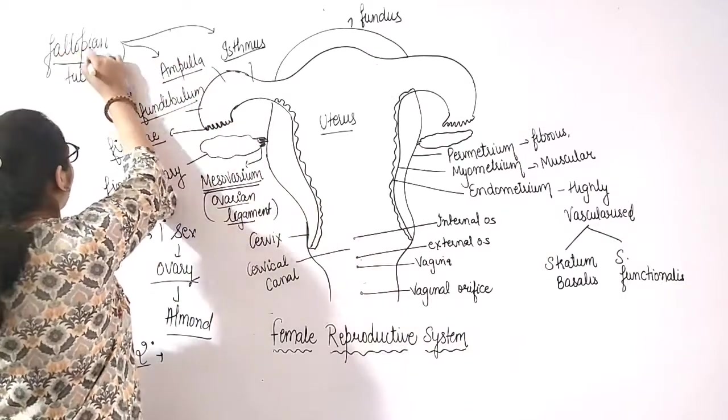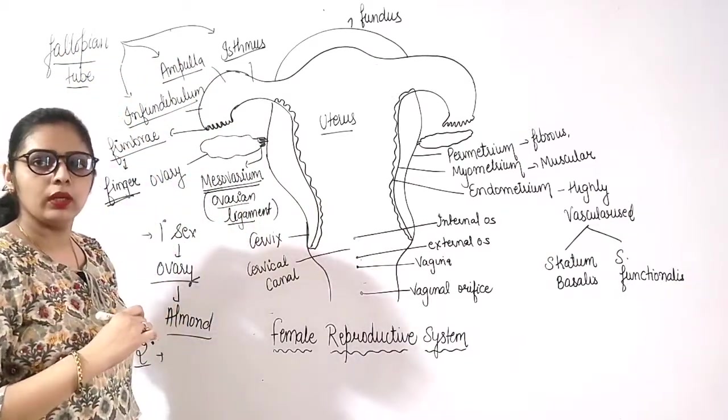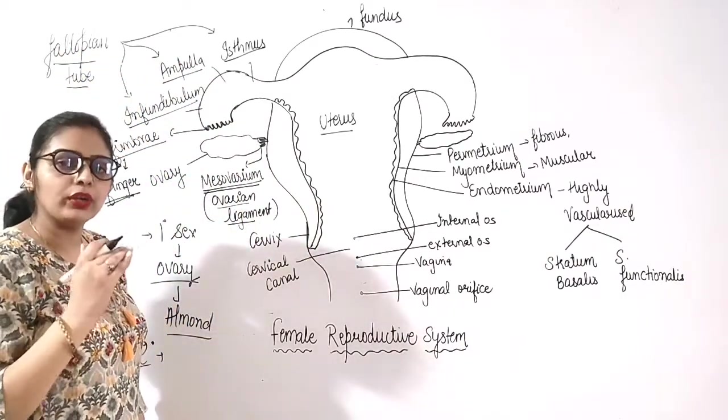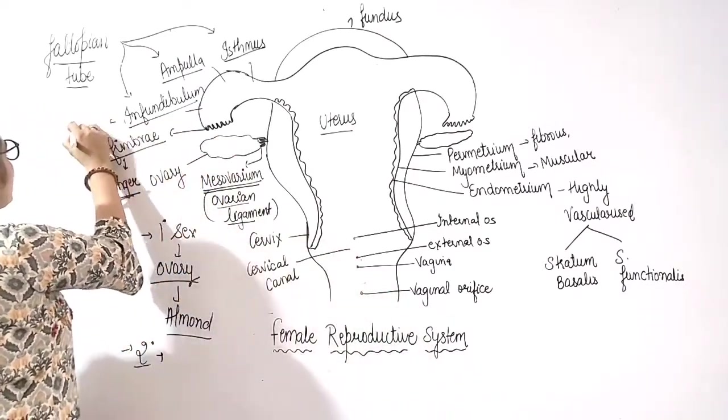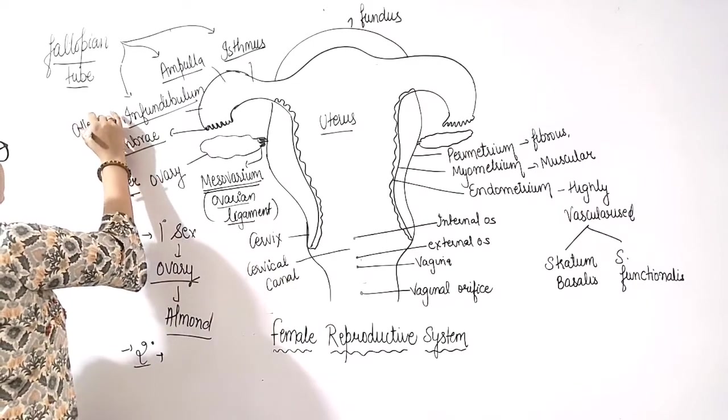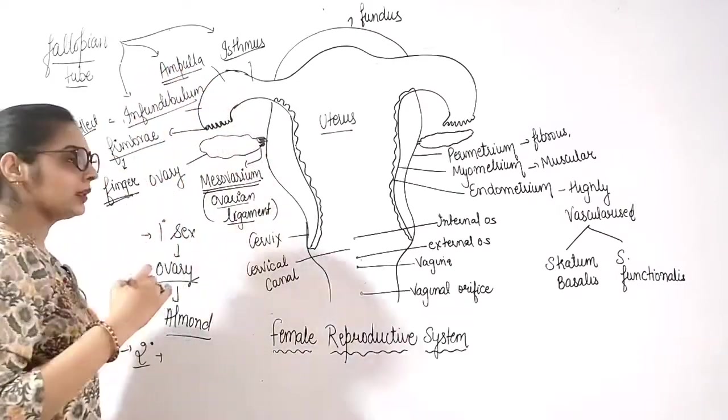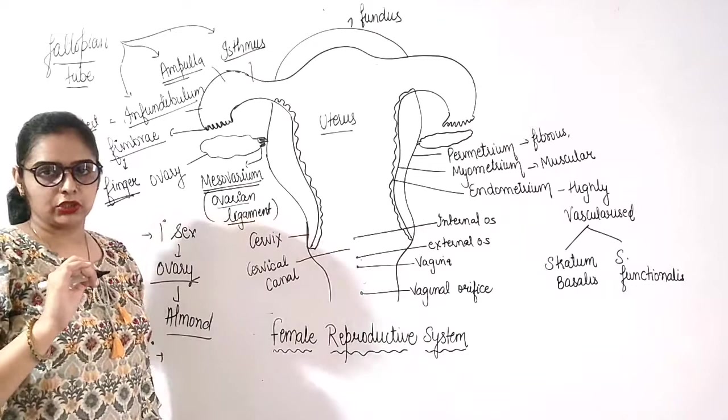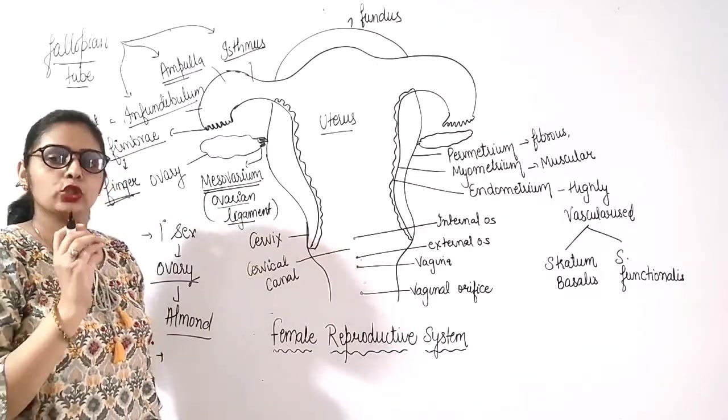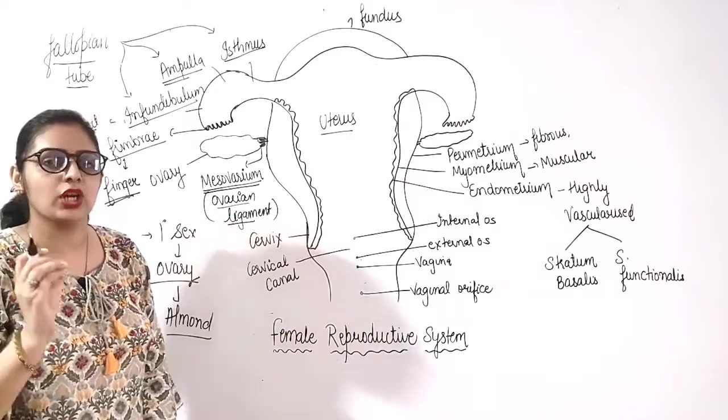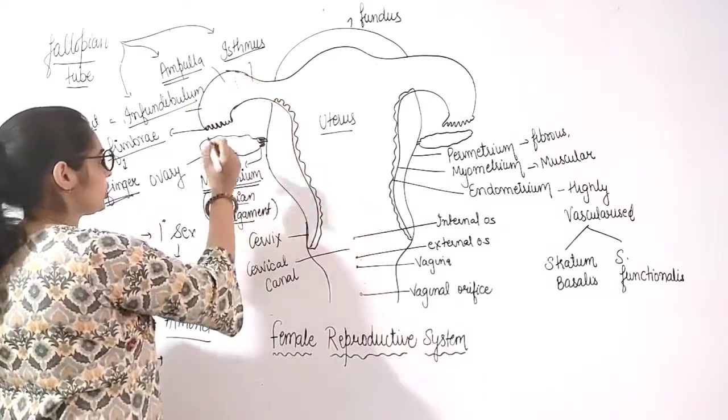And these three are parts of fallopian tube. They are the part of oviduct or fallopian tube. So infundibulum helps to collect the egg. Ampulla, that is the site for fertilization. And the proper site for fertilization is ampulla isthmus junction. Ampulla isthmus junction.